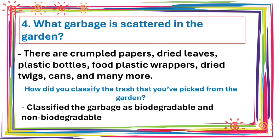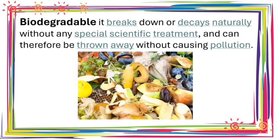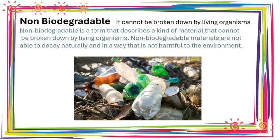Garbage scattered in the garden includes crumpled papers, dried leaves, plastic bottles, food plastic wrappers, dried twigs, cans, and many more. Classify the garbage as biodegradable and non-biodegradable. Biodegradable materials break down or decay naturally without any special scientific treatment and can therefore be thrown away without causing pollution. Non-biodegradable is a term that describes a kind of material that cannot be broken down by living organisms. Non-biodegradable materials are not able to decay naturally in a way that is not harmful to the environment.